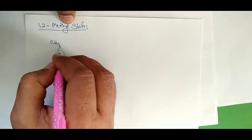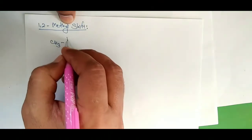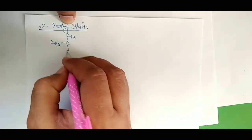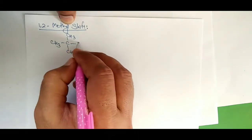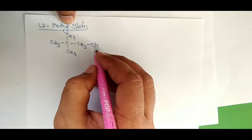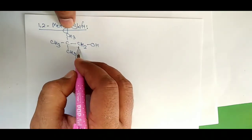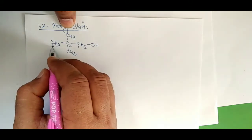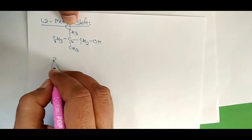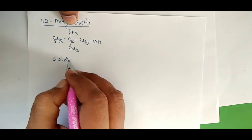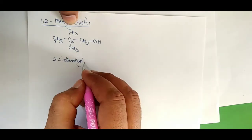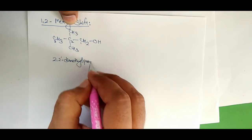We have here CH3, CH3, CH3, CH2, and OH. The longest chain is 1-2-3, a 3-carbon atom chain. So it is 2,2-dimethyl — and counting the carbons in the longest chain — Propanol.